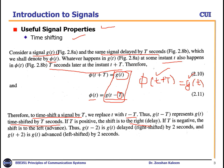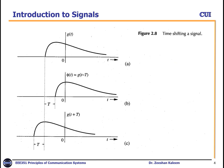So g(t minus T) represents g(t) time-shifted by T seconds. If T is positive, the shift is to the right — it is a delay. If T is negative, the shift is to the left — it is called advance. Thus g(t minus 2) is g(t) delayed by two seconds, and g(t plus 2) is advanced by two seconds. This is how the delayed signal looks: it is similar to g(t) but shifted right by T seconds.